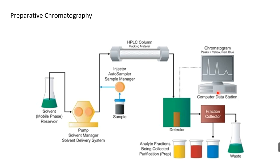If a person working in a bioprocess lab wants to use HPLC for purification, preparative or semi-preparative chromatography is needed. The column is bigger, solvent reservoir is larger, the pump is larger, and the sample injector can handle 300–500 ml. After the detector, the outlet connects to a fraction collector, which collects each fraction: first peak into the first test tube, second into the second, and so on.